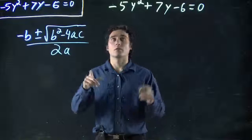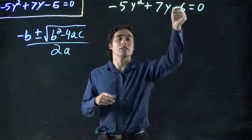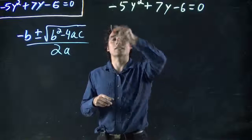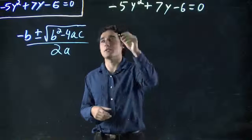In this case, b is 7, c is minus 6, and a is minus 5. Let's plug that all into our equation.